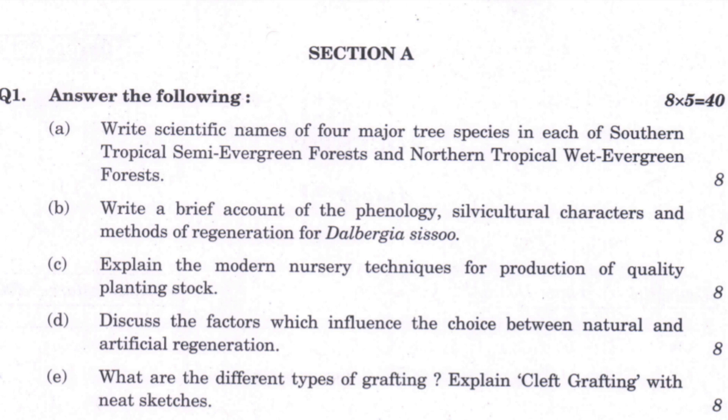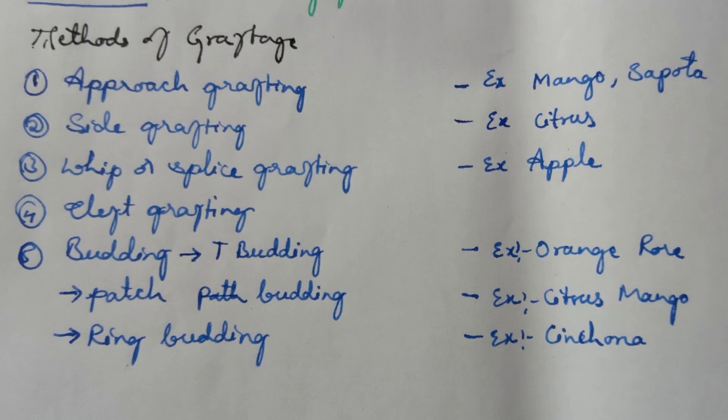Question five asks about different types of grafting and to explain cleft grafting with neat sketches. There are different types of grafting: approach grafting, side grafting, whip or splice grafting, cleft grafting, and budding.